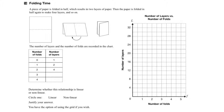If we look at the table: after no folds, it's one layer thick; after one fold, it's two layers thick; and after two folds, it's four layers thick, etc. So we start to see a pattern — each time you fold it, we're doubling the number of layers.